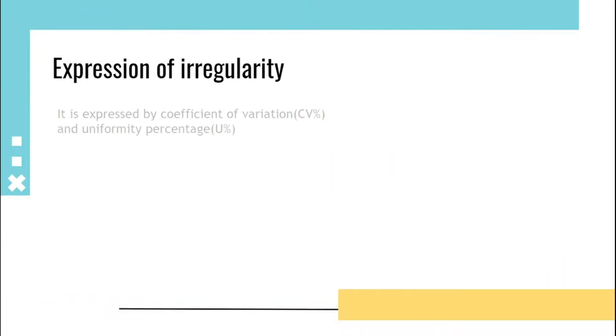Hello guys, welcome to TIPS, a platform for textile problems and solutions. Now we are going to learn about yarn irregularity. Expression of irregularity: It is expressed by coefficient of variation (CV%) and uniformity percentage (U%).